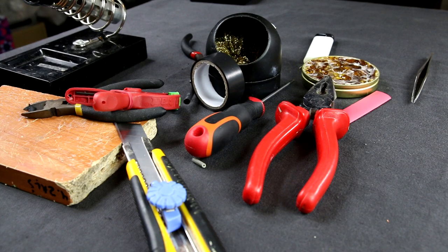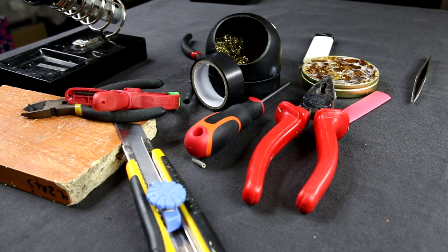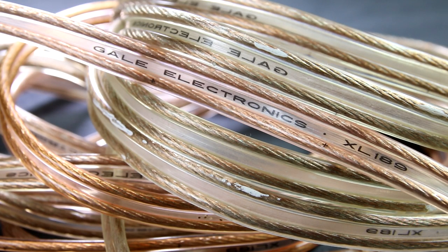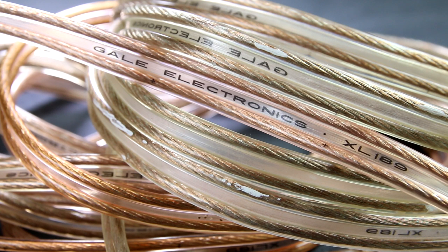As always, for every do-it-yourself job you will need a soldering kit with different instruments, banana and spade plugs, and some good speaker cable. This time it will be Gale Electronics 2x2.5 square millimeters OFC 9 speaker cable made from oxygen free copper.